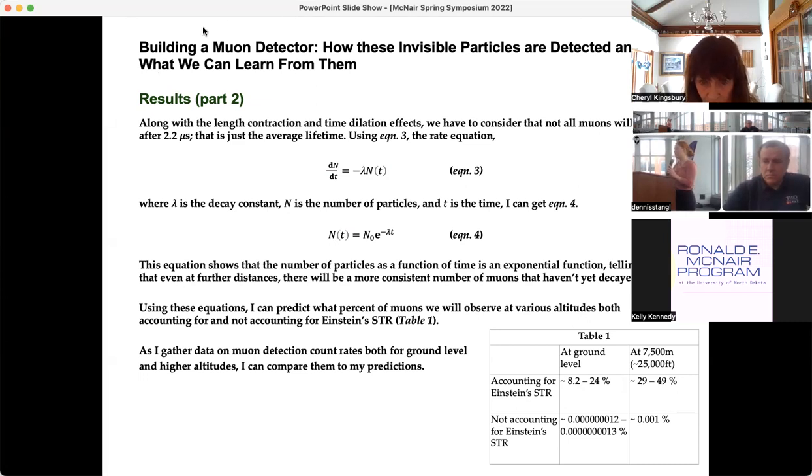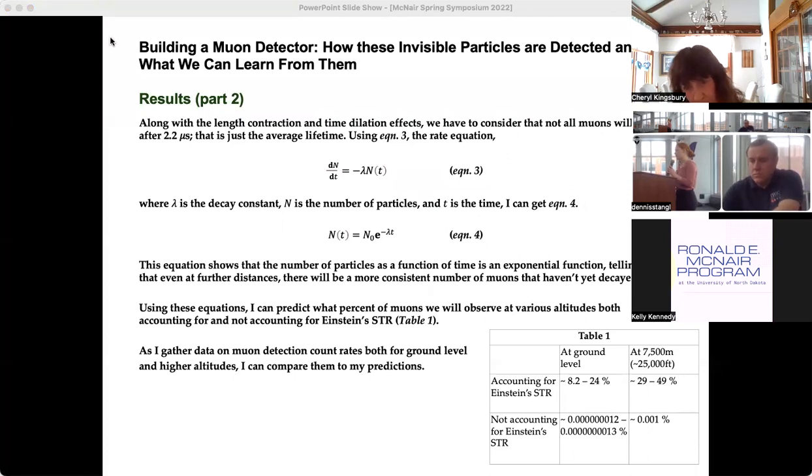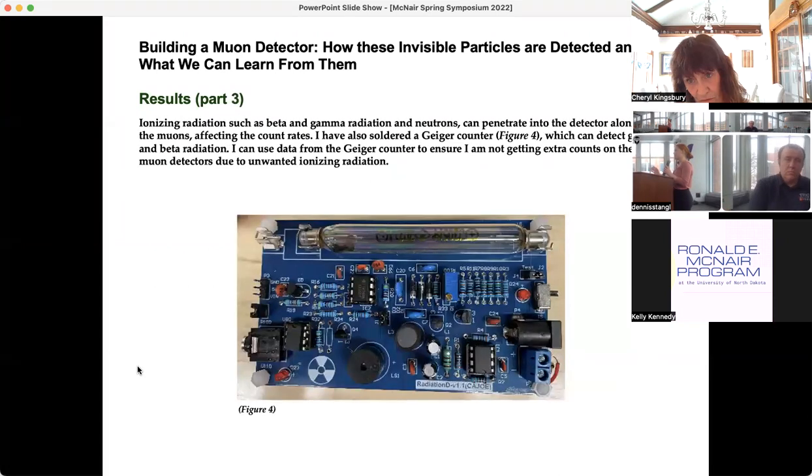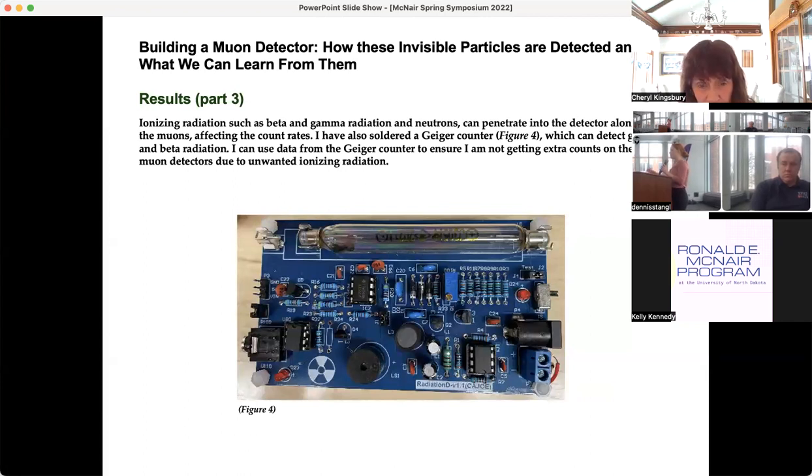Another factor with the muon detector is that sometimes muon detectors can pick up other sources of ionizing radiation, like beta and gamma radiation, and neutrons can affect the count rates in the muon detectors. So I've also soldered a Geiger counter, which is in the picture up there, and that Geiger counter can detect both beta and gamma radiation. I tested it just last week and it worked great. I will be able to set up that Geiger counter along with the muon detectors, and that'll ensure that I'm not getting any extra counts from outside radiation. I will be able to subtract the count rates that I'm getting from the Geiger counter from the muon detectors.